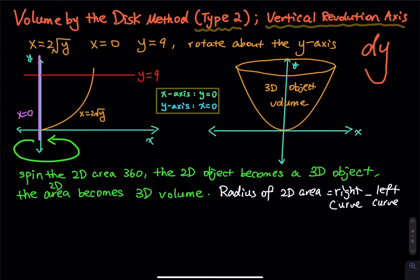In this video we are going to talk about volume by the disk method — this is a Type 2 method. Type 2 means the area is rotated about a vertical revolution axis, for example the y-axis. When that is the case, we will be using a dy integral.